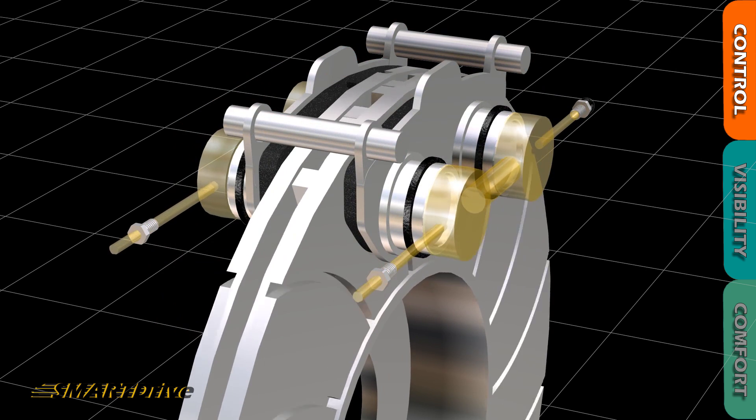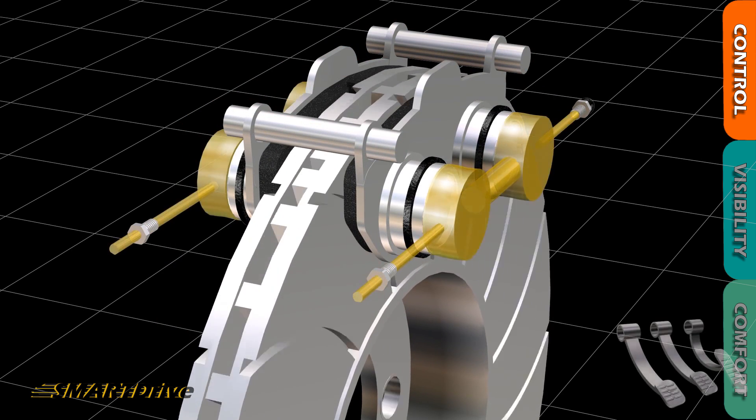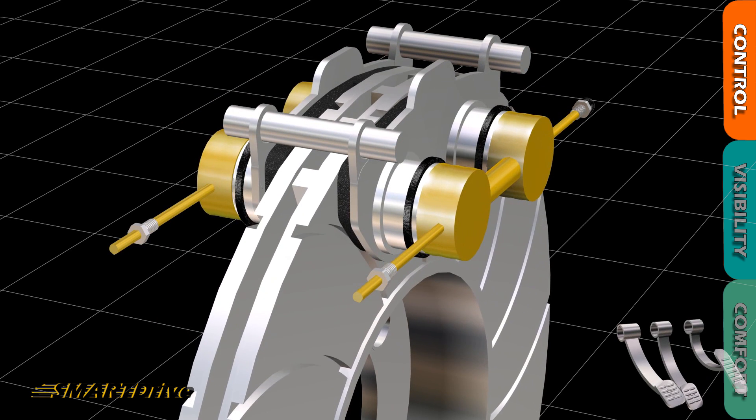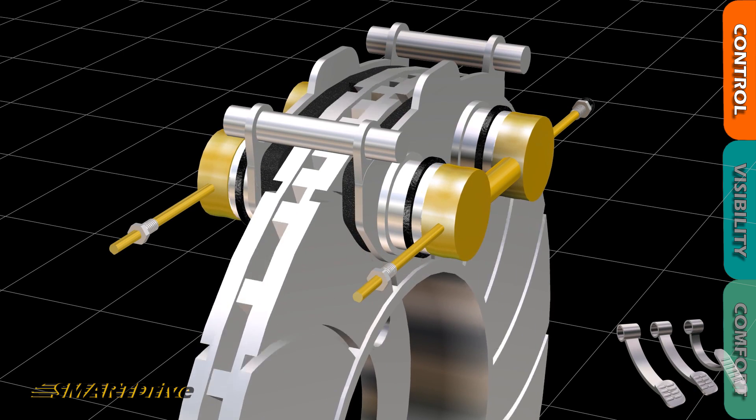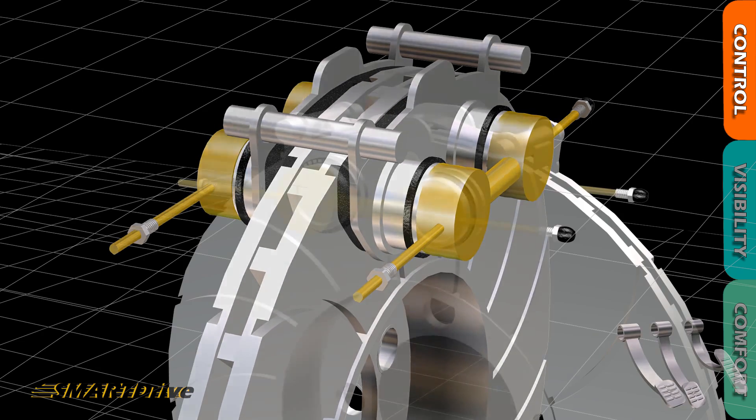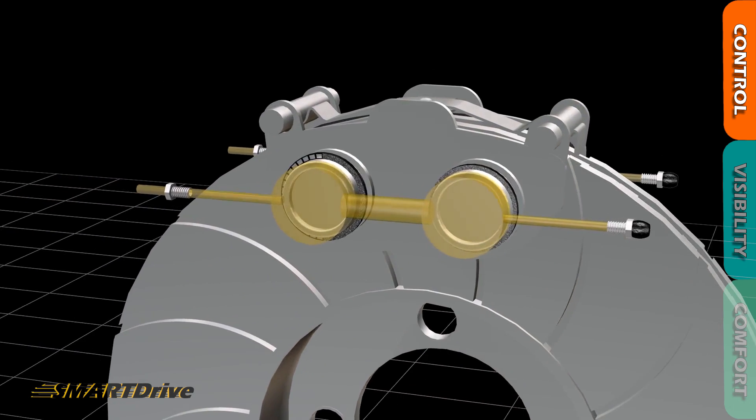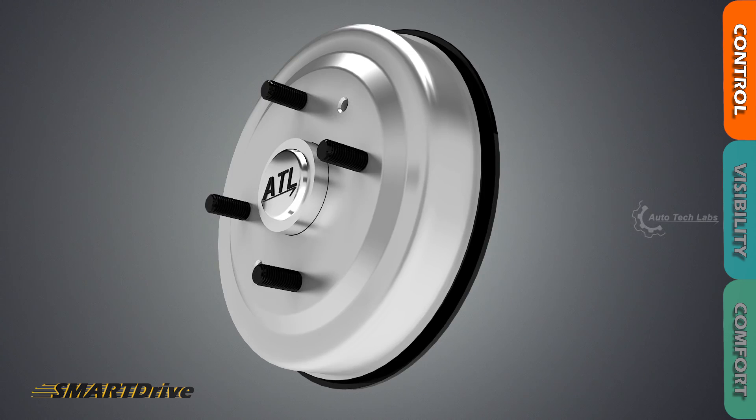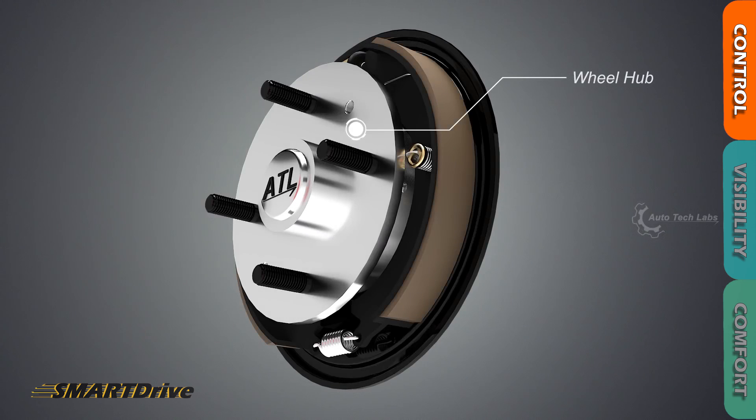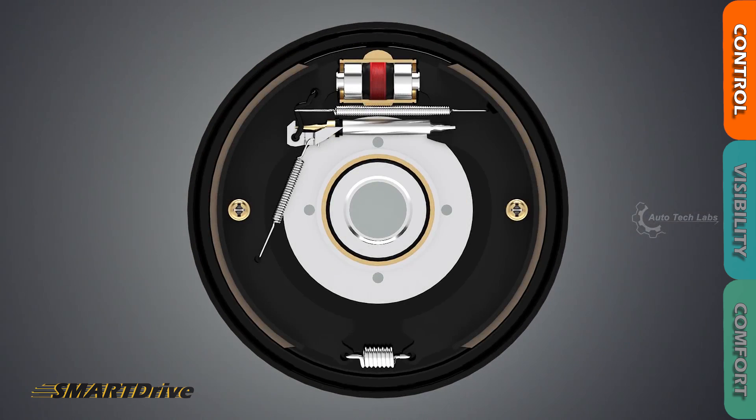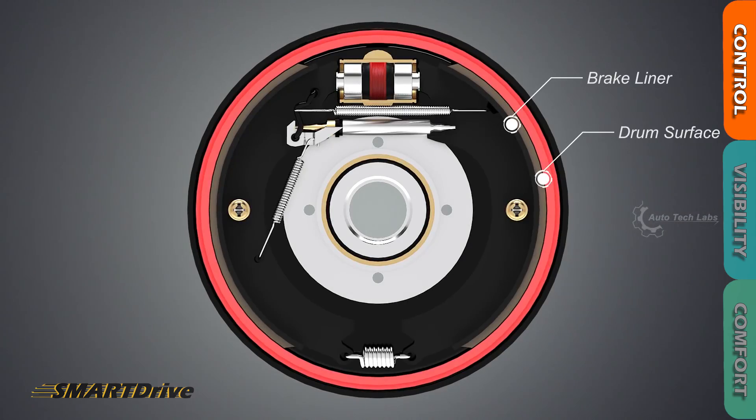The disc pad will remove all the moisture or water available on the disc within two or three rotations itself. But in the drum brake system, we have some composites inside the cabin, so there might be a possibility of deposition of moisture and water, so it will be really hard for the friction plates to gain the traction.